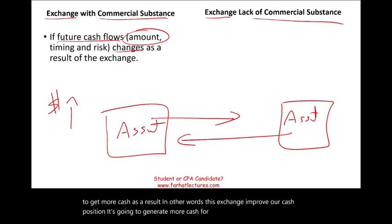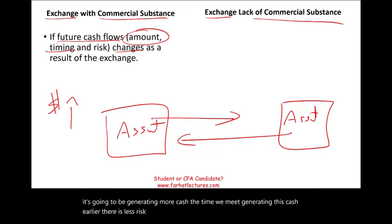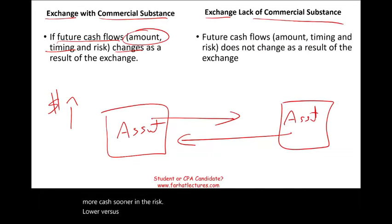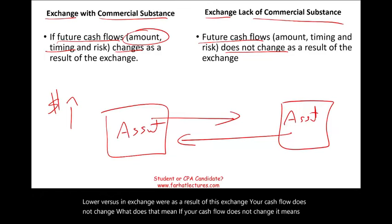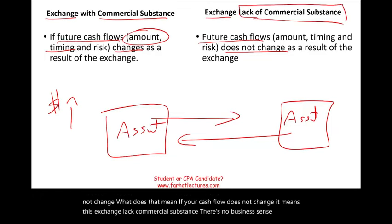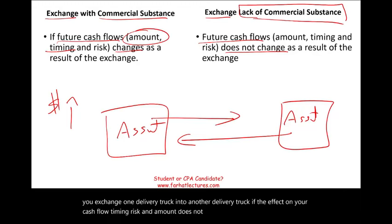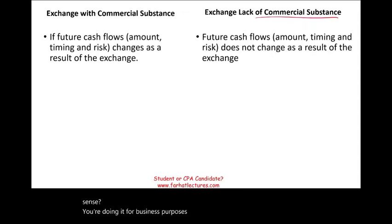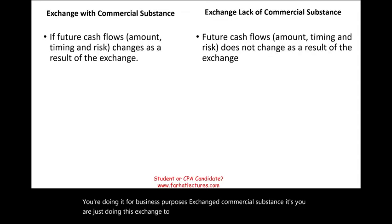The exchange improves our cash position — it's going to generate more cash in terms of revenue, generate it sooner, and with less risk. Versus an exchange where, as a result, your cash flow does not change — that means this exchange lacks commercial substance. There is no business sense. Why would you exchange one delivery truck for another delivery truck if the effect on your cash flow — timing, risk, and amount — does not change? Has commercial substance means it makes business sense; you are doing it for business purposes. Lacking commercial substance means you are just shuffling papers to either book a gain or a loss.